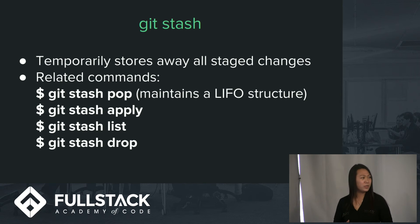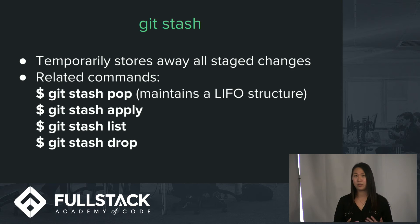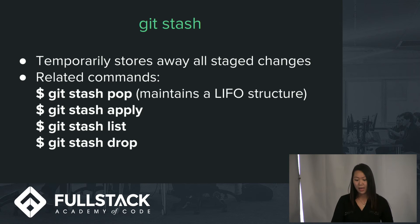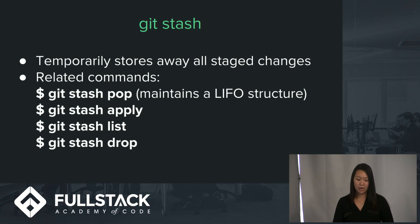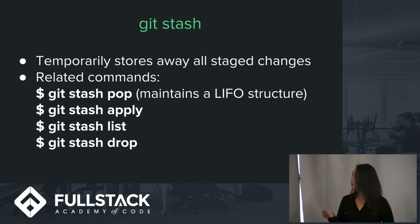`git stash` is a good way to store away all your staged changes. Say you're midway through a code change, not quite ready to commit yet, but you don't want to abandon your work — you stash it away. Git maintains a last-in, first-out structure, operating like a stack. Everything you stash, you're pushing onto the stack, and then you can do `git stash pop` to pop off your most recently stashed files. Alternatively, `git stash apply` applies these changes to multiple branches at once, and you can also list or drop stashed entries.